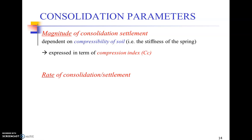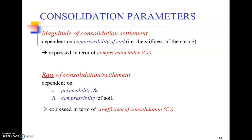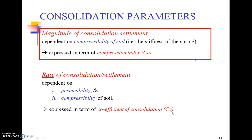The amount or magnitude is generally quantified in terms of Cc, that is the compression index, or Cr, that is the recompression index. The rate of consolidation is controlled by the permeability of the soil and the compressibility of the soil — how quickly or slowly water can pass through the voids. The interconnectivity of voids defines permeability, and compressibility indicates how soft the soil is. The rate of consolidation is generally represented by the coefficient of consolidation, Cv.